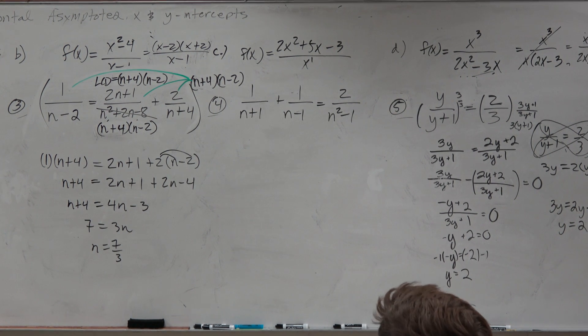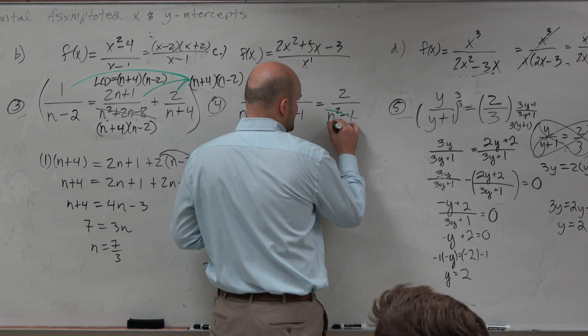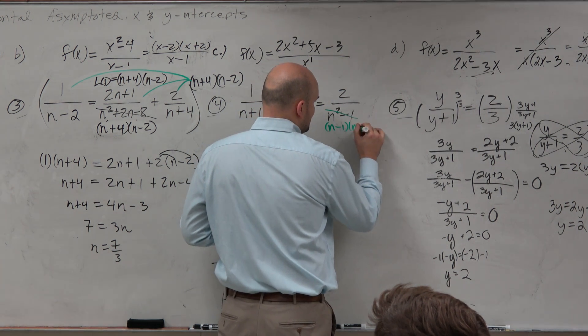So in this next example, rather than finding the LCD, well, we still want to find the LCD. We can still figure out that this is n minus 1 times n plus 1.